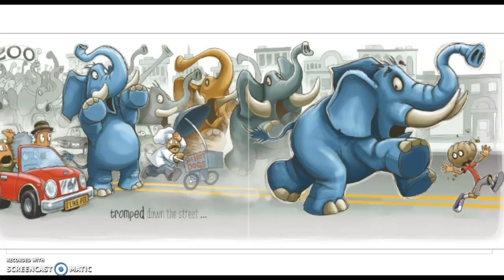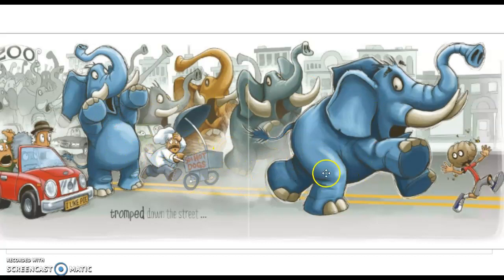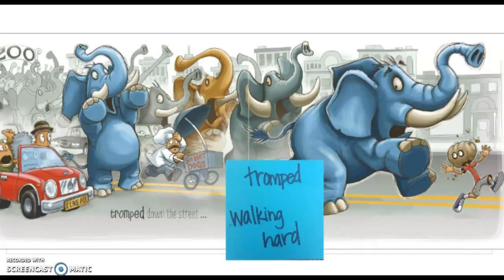There was one more word in this book that tricked me a little bit — I wasn't quite sure what it meant. Think along with me and see if you can figure out what it means: 'Tromped down the street.' Let me think — I probably need to think about what is tromping down the street. The elephants are tromping down the street, and it looks like they are hitting the ground very hard. I know that because I looked at the picture. So I am thinking that tromped down the street means to walk very hard.